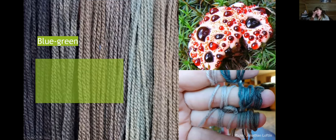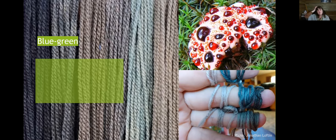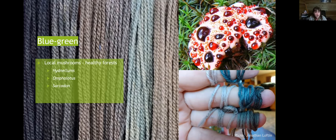There's a color we don't really have a word for in English — it's about a third green, a third gray, and a third blue. Some people call it glaucous, but it's not quite right. You get this from Hydnellum mushrooms — the toothed mushrooms, also called hedgehogs — that's Sarcodon or hawkswing. Those are just coming out now. It's a muted teal with more gray. Local mushrooms from healthy forests: Hydnellum, Omphalotus, and Sarcodon are the tooth or gill mushrooms relevant here.